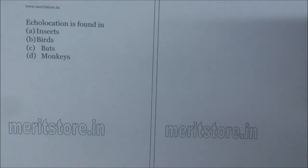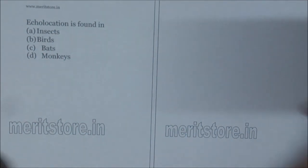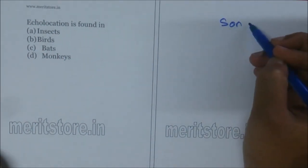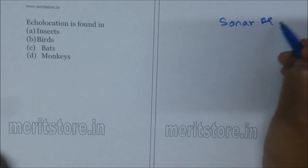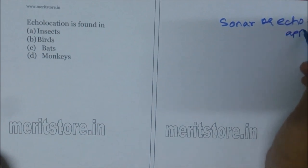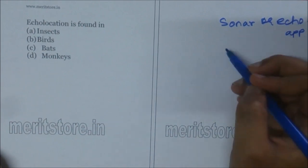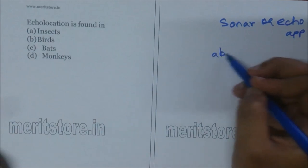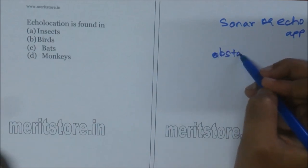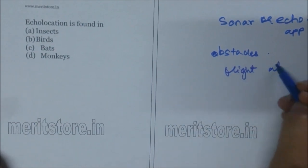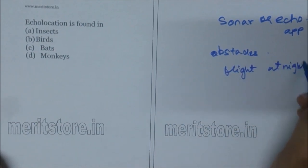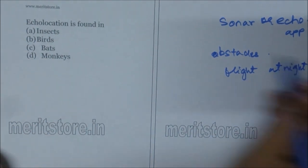Echolocation is found in: A insects, B birds, C bats, D monkeys. Bats have a highly developed sonar — that is, sound navigation and ranging — or echo apparatus, a kind of radar to avoid obstacles in the way while in flight at night. So it is seen in mammals: bats. Option C is the correct answer.